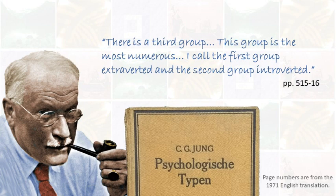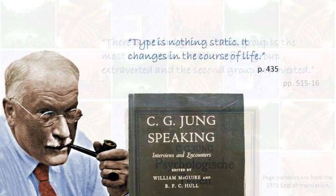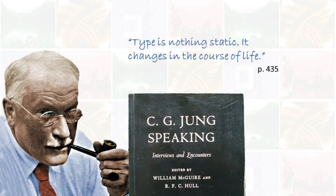Isabel Briggs Myers believed that for each of the opposites, everybody was either one or the other — for example, you were either an introvert or an extrovert. However, Jung's view was that there were three groups: introverts, extroverts, and those in the middle, and he thought the middle group contained the largest number of people. Also, Isabel Briggs Myers believed that your type is the same throughout life, but Jung took a different view — type can change, and ultimately it can be transcended. We go beyond having a psychological type and develop a more unique and individual attitude.